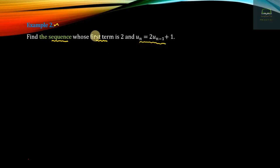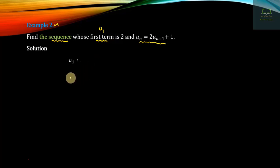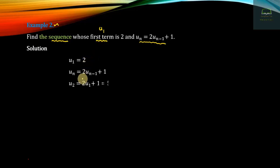When the first term is u1 = 1, u_n equals 2n. When the first term is u1 = 2, u_n equals 2n. We will find the recurrence formula for the first term when u_n equals 2n.